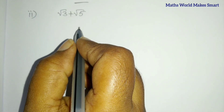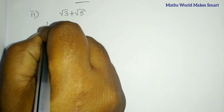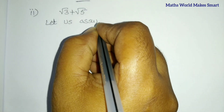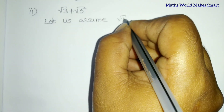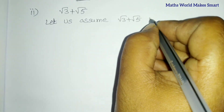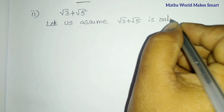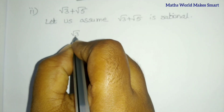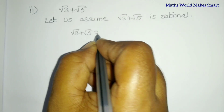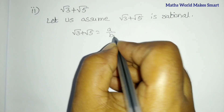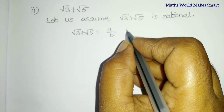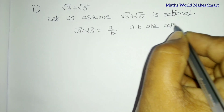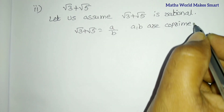Problem 2: Let us assume root 3 plus root 5 is rational. By the rational number definition, we write it in fraction formula: root 3 plus root 5 equals A by B, where A and B are integers and co-prime, meaning their common factor is 1.